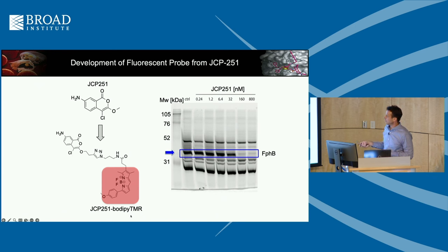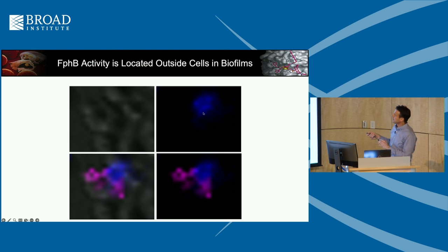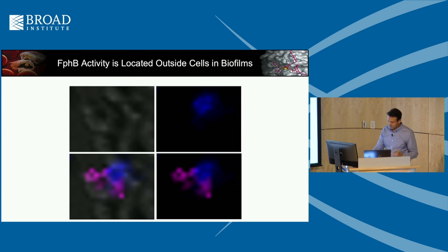This is a covalent modifier: a serine first opens the ring, and then there's a secondary attack by histidine — you get a dual attack. We then took that molecule and turned it into a fluorescent probe: we tethered off the methyl group and put on a Bodipy fluorophore. When put into biofilms and viewed by microscopy — with vancomycin staining live cells in blue — you could see the FphB enzyme in pink spread throughout the biofilm surface. It really is a viable target within the biofilm.